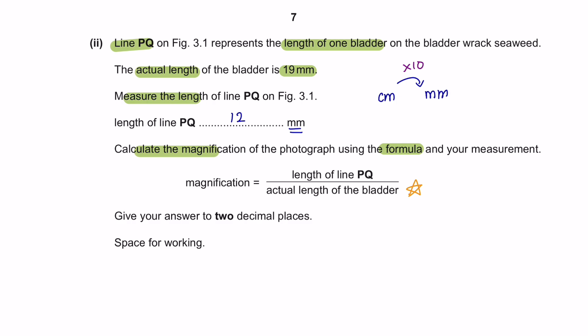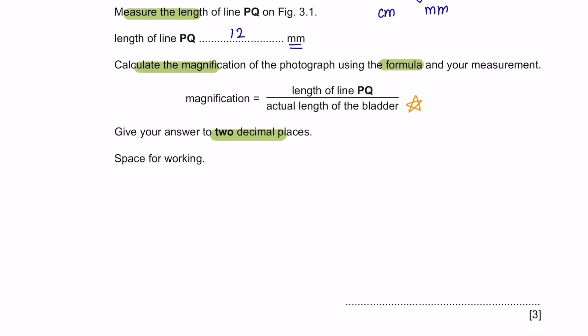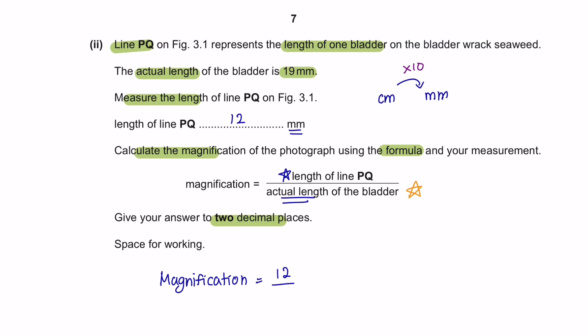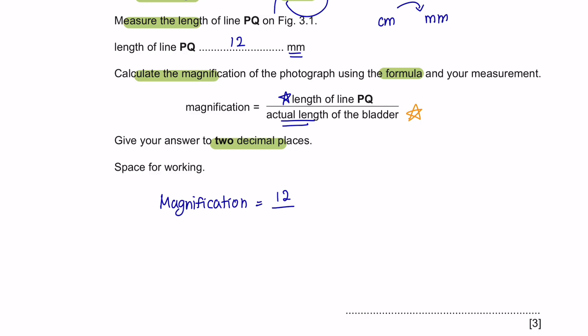You are required to give your answer to 2 decimal places. Okay, this is pretty simple. So the length of line PQ was 12 mm. And the actual length was already given, which is 19 mm. And in your calculator, you will get a value of 0.6315. You have to give your answer in 2 decimal places. So the final answer would be 0.63.